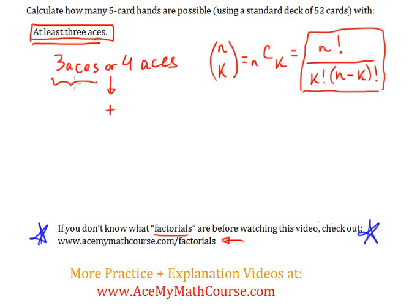So in the case of three aces, we have four aces and we're selecting three of them, so four combination three. And we can't forget that it's a five card hand, right?